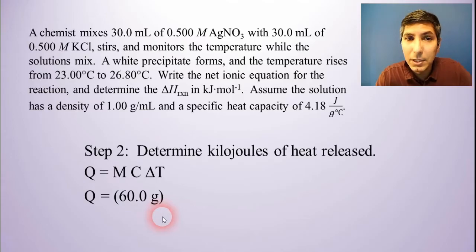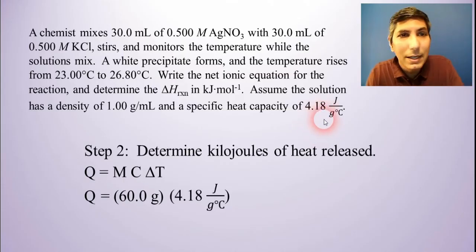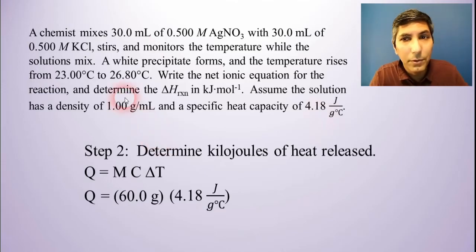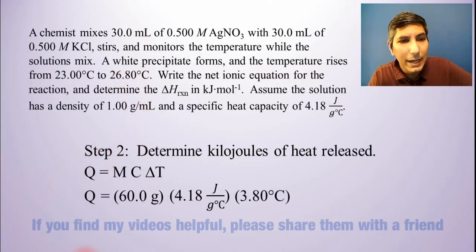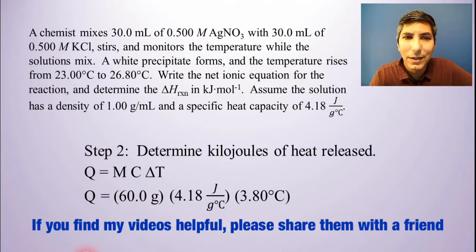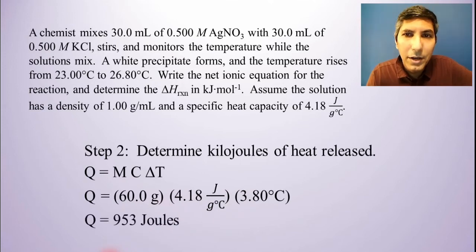Now the C, the specific heat of the solution, it tells us in the problem will be 4.18 joules per gram degree Celsius. And that delta T is easy to calculate too, because it's going from 23.00 degrees Celsius up to 26.8. So that's a rise of 3.80 degrees Celsius. So we can take our calculator and multiply these numbers by each other. And we get a value for Q of about 953 joules.